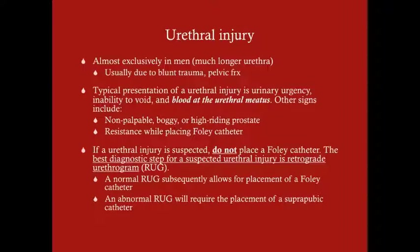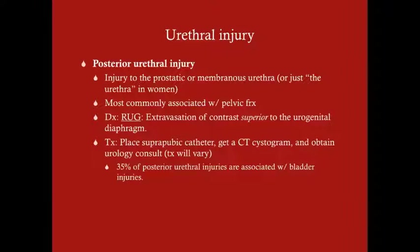If urethral injury is suspected, do not place a Foley catheter - the next diagnostic step is a retrograde urethrogram (RUG). You shoot dye in the opposite direction the urethra would normally conduct fluid and look for extravasation. A normal RUG allows you to place a Foley catheter. If the RUG is abnormal, we still need to drain the bladder to prevent post-renal failure, but instead of a Foley catheter we place a suprapubic catheter directly into the bladder.